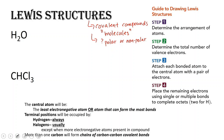For water, the least electronegative atom is hydrogen. However, hydrogen can only make one bond since it's found in Group 1. So we're going to put oxygen as the central atom because it can make more than one bond — it can make two bonds because it's in Group 6A. So let's arrange our atoms in space.